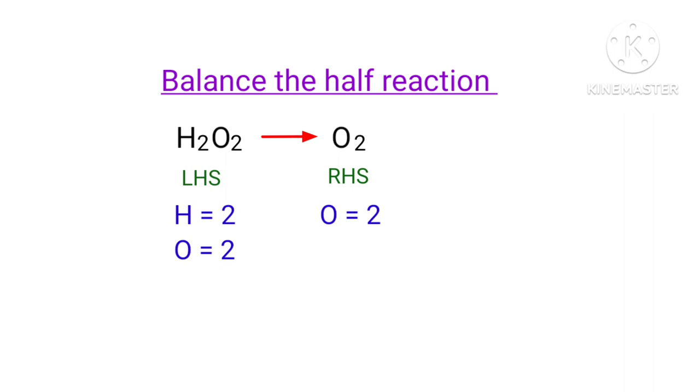Now we can balance the hydrogen atoms. To do this, we can produce H plus ions. Now the number of atoms are balanced on both sides.